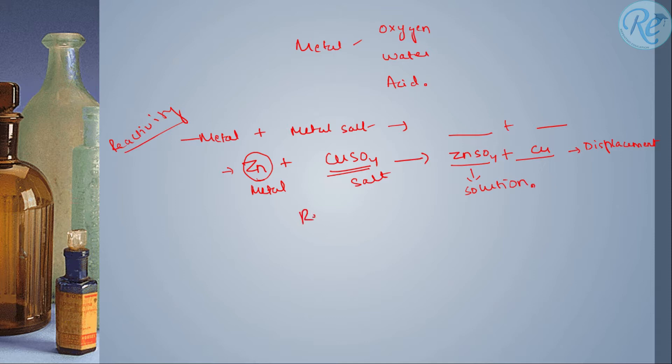So we have a reactivity series for that in which there is a list of metals in which on the top we have most reactive metals while here in the bottom we have least reactive metals.